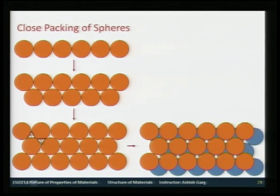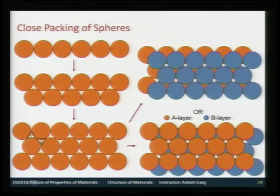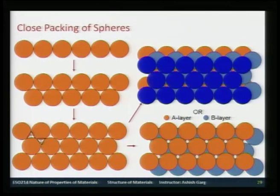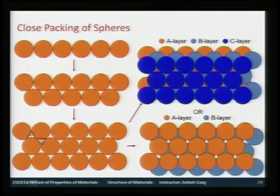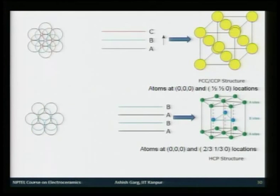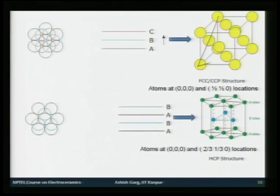The third layer can either go right on top of the first layer, giving ABAB packing, or cover the second type of holes, giving ABCABC packing. ABAB packing gives rise to a hexagonal close-packed structure, and ABCABC packing gives rise to a face-centered cubic structure. The closest-packed plane is the (111) plane in FCC, stacking atoms along the body diagonal.